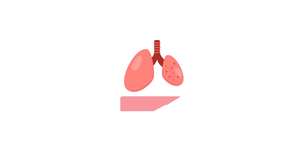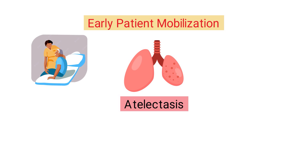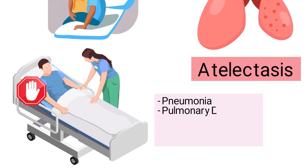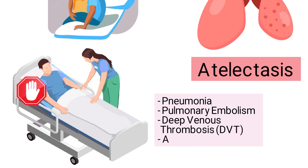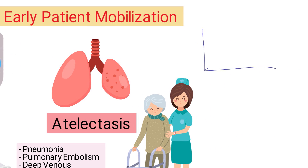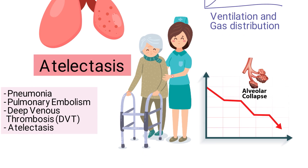One of the best ways to prevent atelectasis is through early patient mobilization. This means that patients should be encouraged to get out of bed and move around as soon as possible after surgery. Prolonged bed rest is linked to an increased risk of several complications including pneumonia, pulmonary embolism, deep venous thrombosis, and atelectasis. However, early ambulation improves ventilation and gas distribution, which decreases the risk of alveolar collapse.